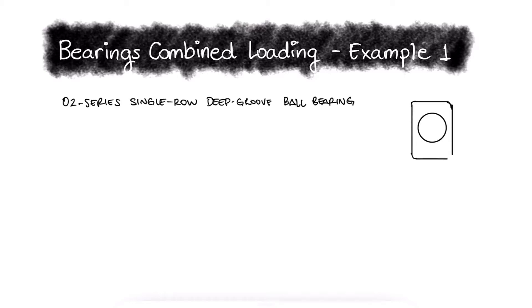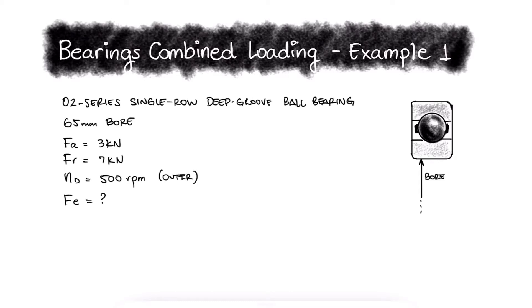An O2 series single row deep groove ball bearing with a 65mm bore is loaded with a 3kN axial load and a 7kN radial load. If the outer ring is rotating at 500 rpm, what is the equivalent radial load?